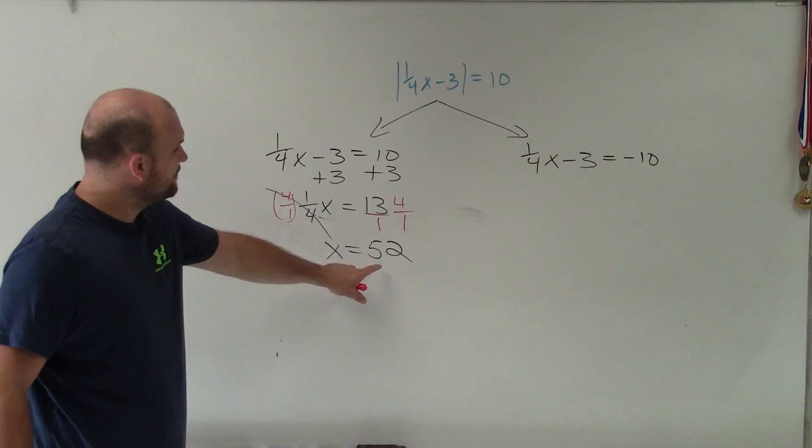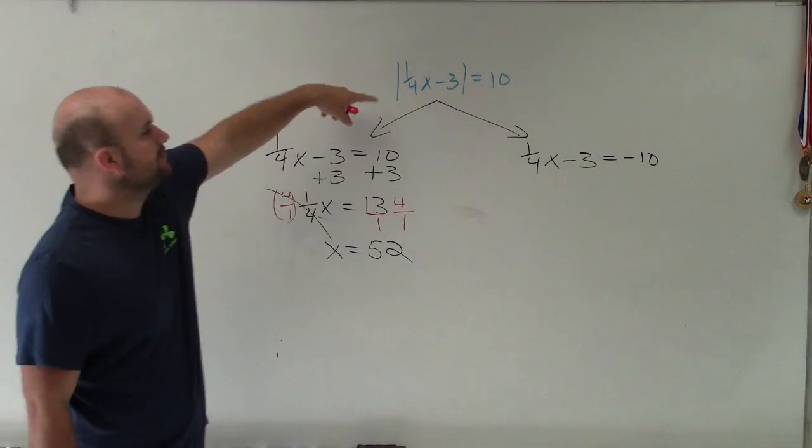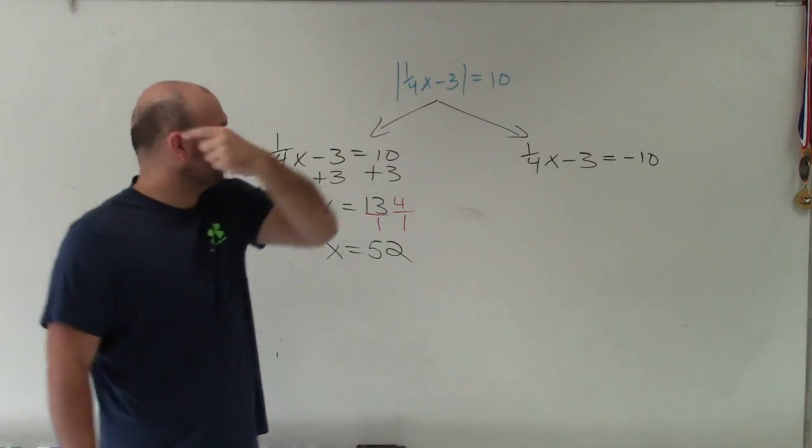All right, I go ahead and plug 52 back into this equation and make sure that it's going to work. And 52 times 1/4 is 13 minus 3 is 10. Good.